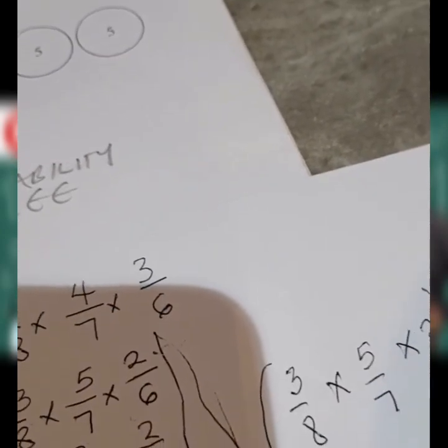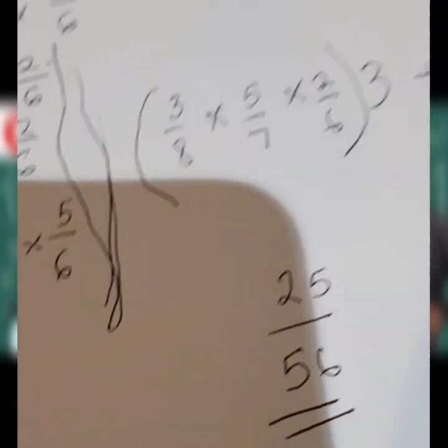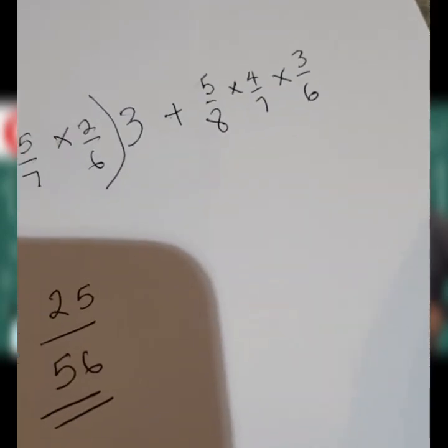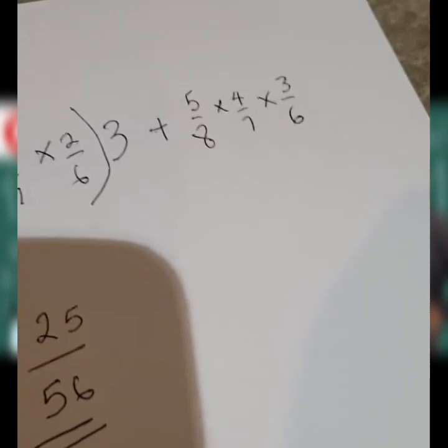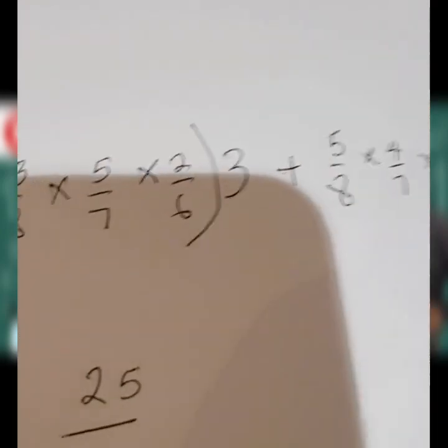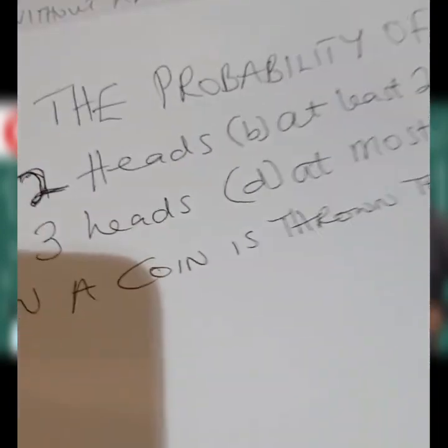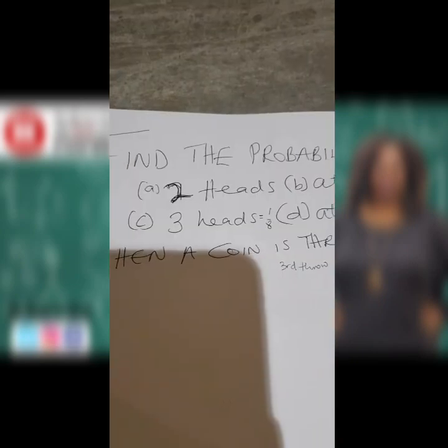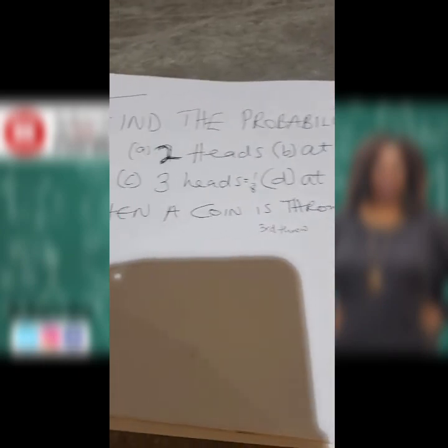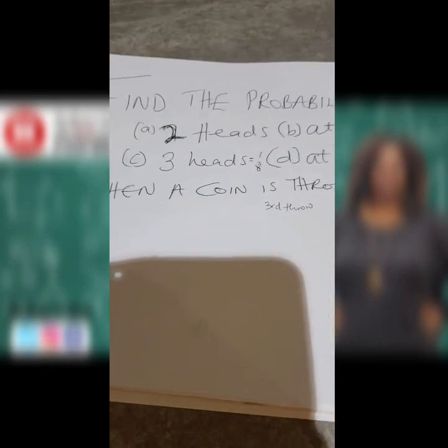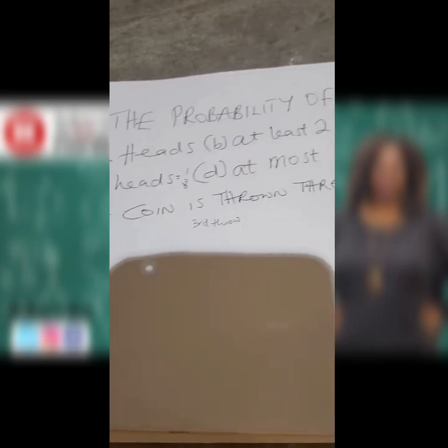The second part I wanted to talk about, where we use a tree diagram, deals with a coin. So say we have this sort of question: find the probability of A) getting 2 heads, B) at least 2 heads, C) 3 heads, and D) at most 2 heads — when a coin is thrown 3 times.